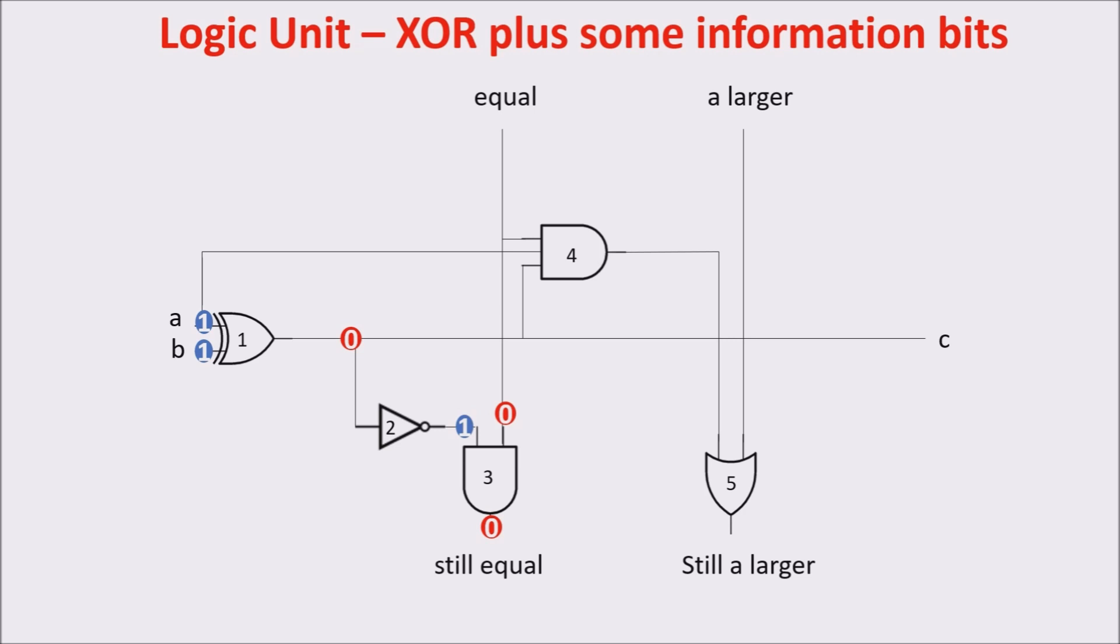Now, let's see the A larger part. In the A equal B case, output C is 0 and the AND with 3 inputs AND 4 is blocked. So, still A larger output depends on A larger input, so from the previous check. Note that if the previous check is at 1, A is larger than B, and the 1 is propagated on the bottom, because if a most significant bit is larger, then the whole byte is larger. In the case of A and B different, C is at 1, and if the more significant bits on the top are equal, we have the equal signal at 1.